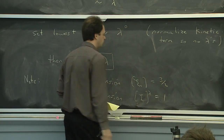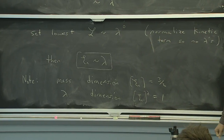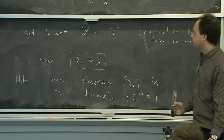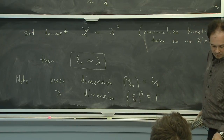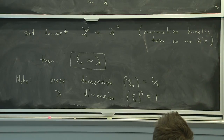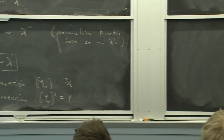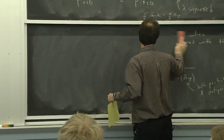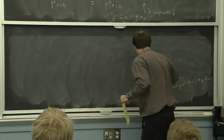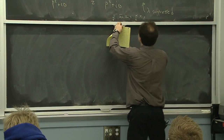The chi_n field has a lambda power-counting dimension of 1, which is different from its mass dimension of 3/2. So in this EFT, power counting is not just counting mass dimension — it's counting lambda powers. That was one of the things mentioned would happen in this effective theory.